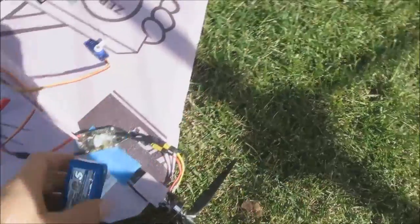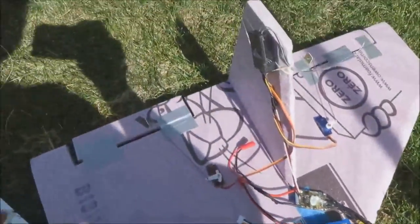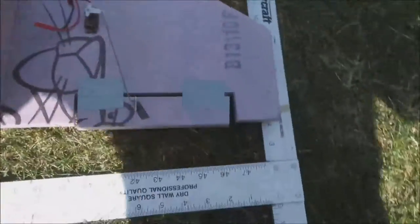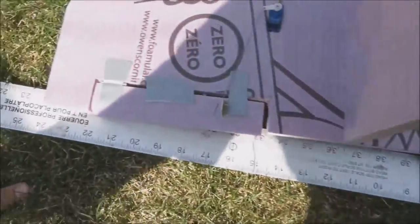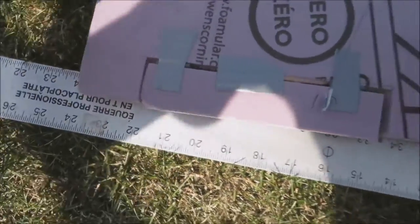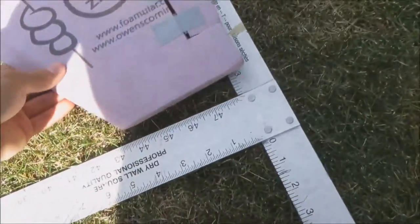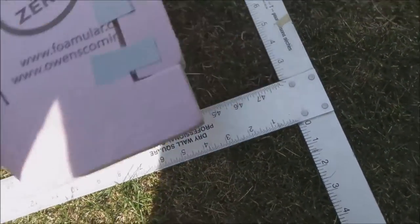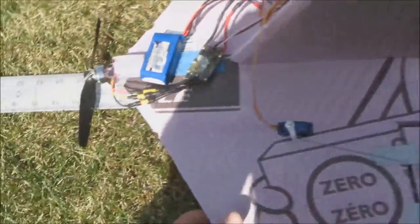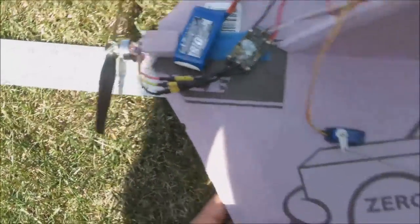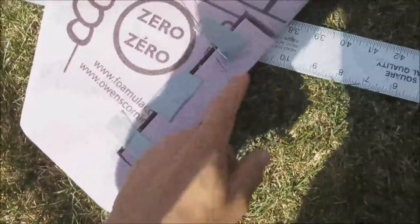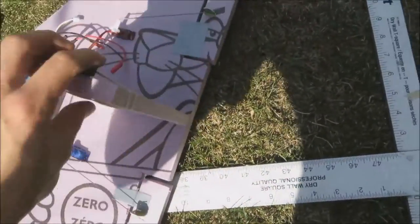If you guys want to build this plane yourself, I'll give you the dimensions. This plane has a wingspan of 24 inches, the chord is five and a half inches, and the overall length is 13 inches. You can make your elevons any size you want - doesn't really matter.